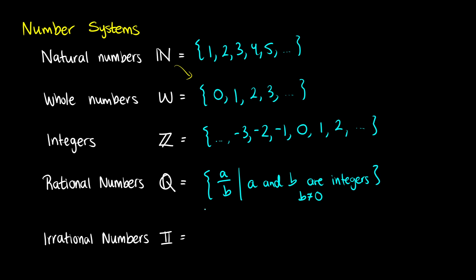So we could write this as: 1 over 1 is a rational number, 2 is a rational number, 1 over 3 is a rational number, and so on. There are many, many rational numbers.